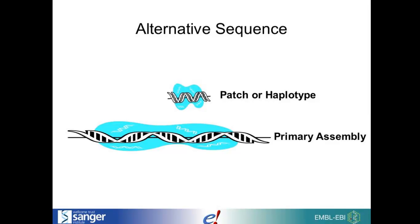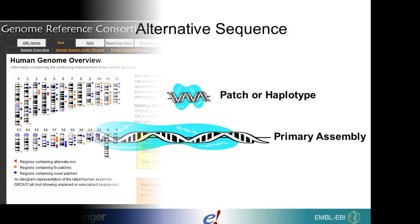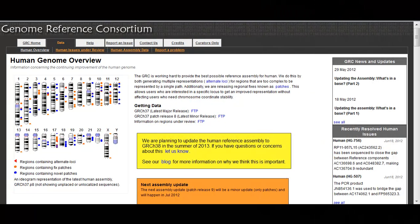Currently, there are two types of alternative sequence. The haplotypes, which were included with the last major release of the assembly, and patches, which were issued as a minor release. The GRC regularly updates the set of patches. You can find out when the next update is planned on the GRC homepage.